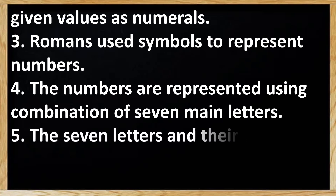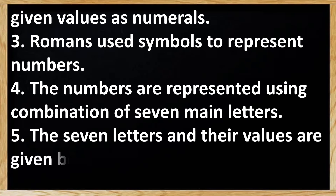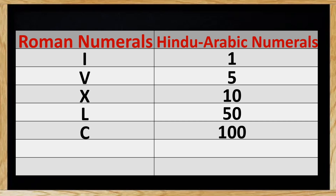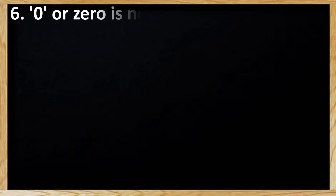The 7 letters and their values are given below. Roman numerals and their Hindu-Arabic numeral equivalents: I represents 1, V represents 5, X represents 10, L represents 50, C represents 100, D represents 500, and M represents 1000.